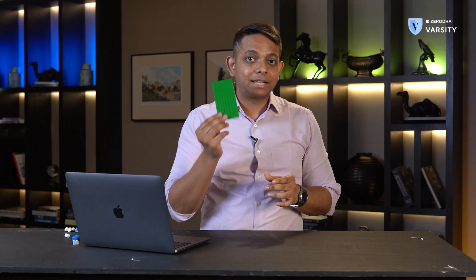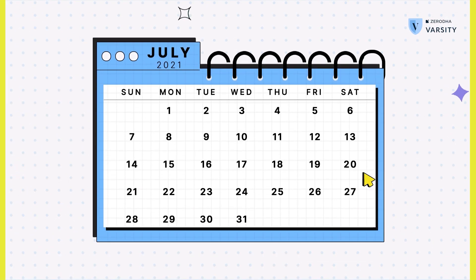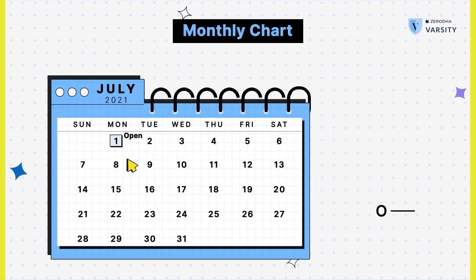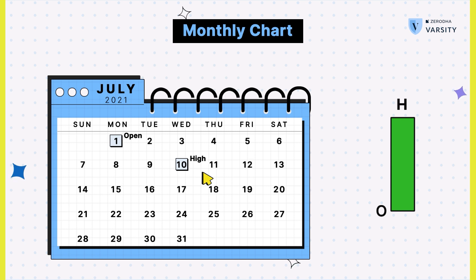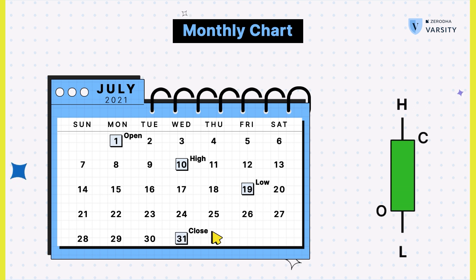The first one we'll talk about is a monthly chart. A monthly chart has an open, high, low, close, but it's on a monthly timeframe. So the open of the monthly chart will be the first trade at the start of the month. The high will be the highest point the stock went in that month, the low will be the lowest point, and the close is the last day's 3:30 closing price for that month. And that gives us a monthly timeframe.